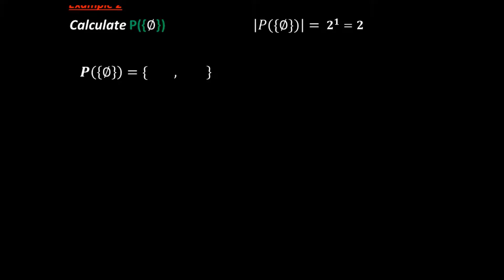Here's a tip: all power sets contain the empty subset — always begin by writing this empty subset in your answer. The second thing: the original set in the power set will always be one of the members in our subsets when calculating the power set. Since we're only expecting two subsets, at the end we write that set as our second subset. So we have our two subsets and that's our answer.